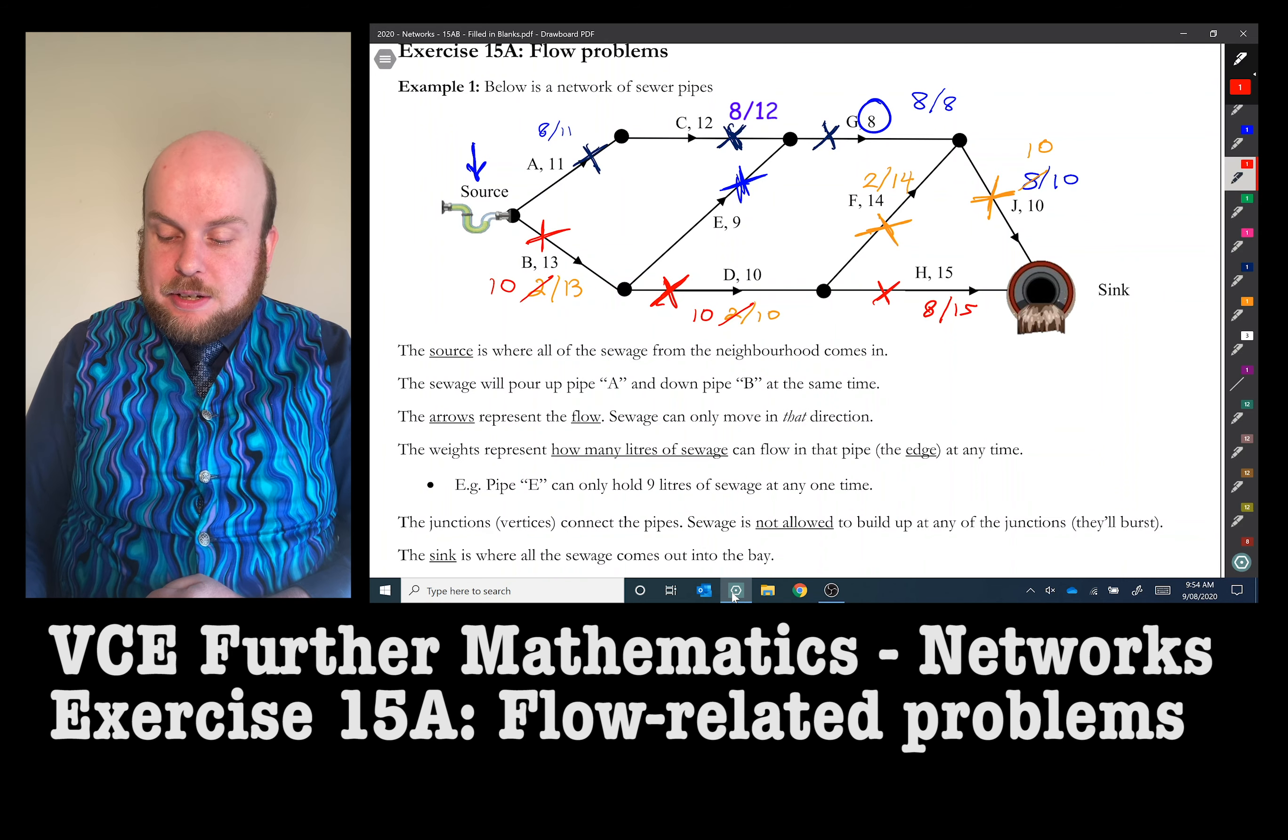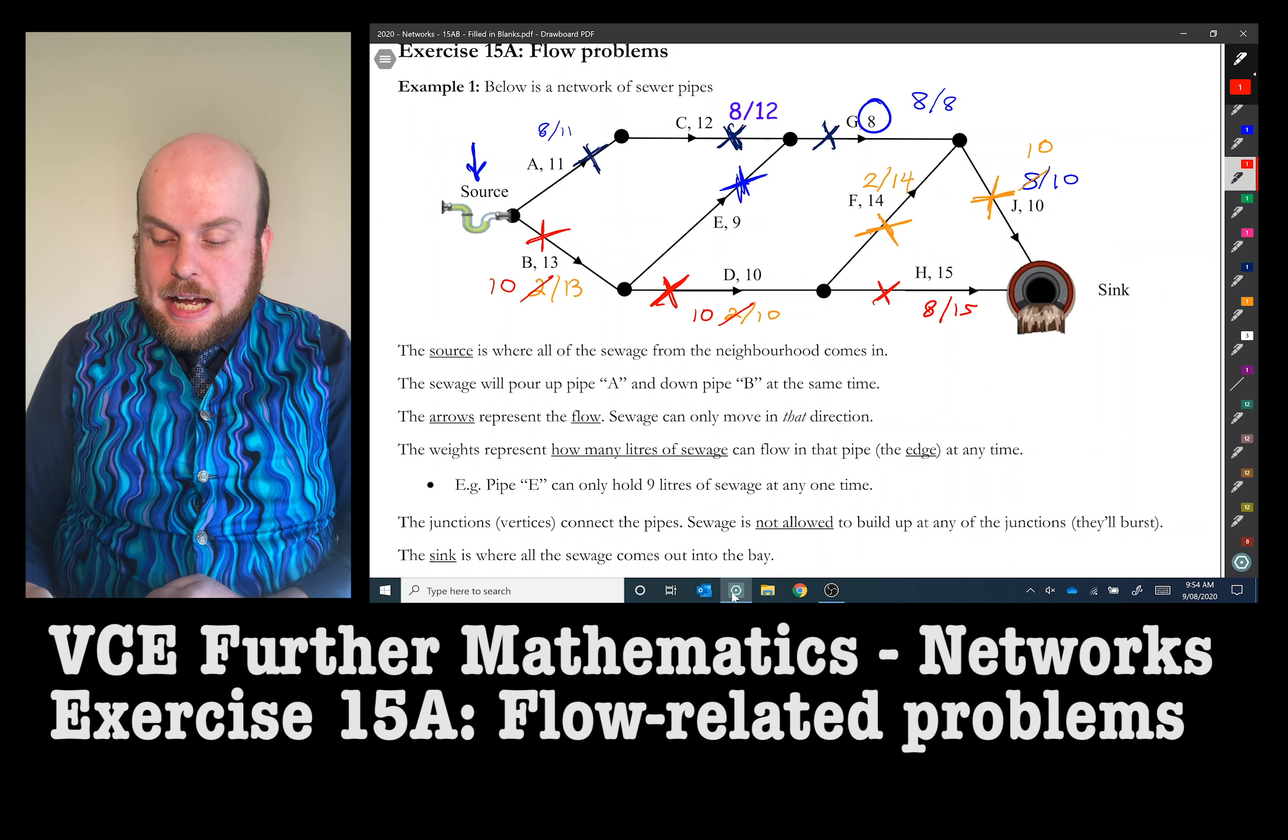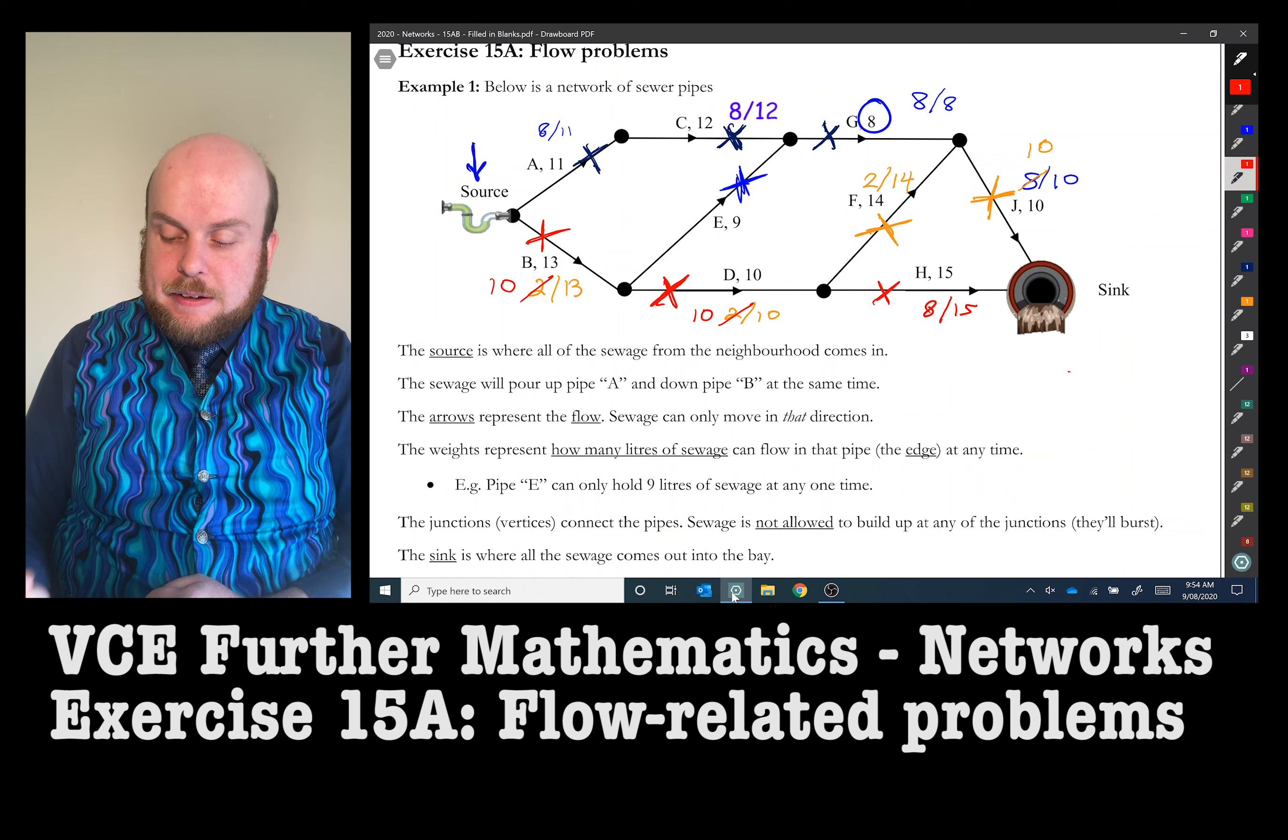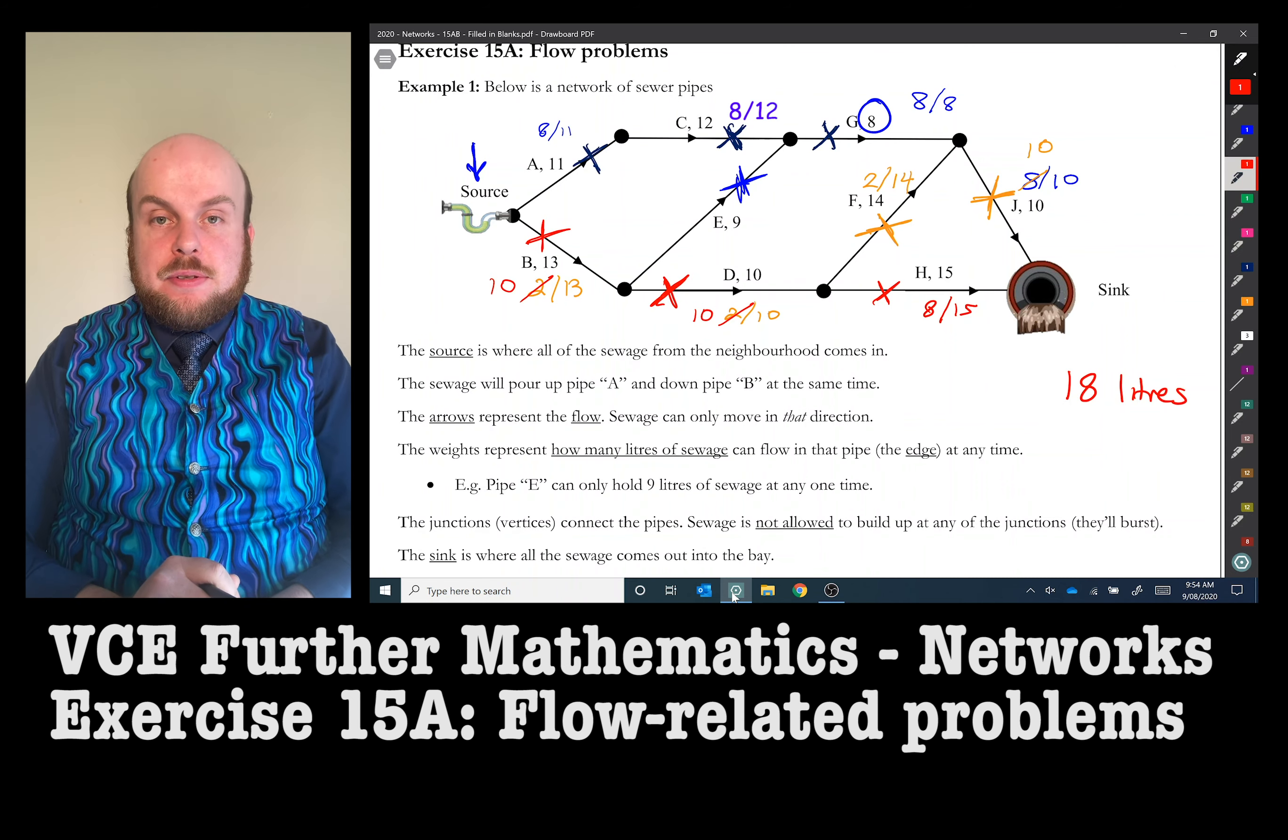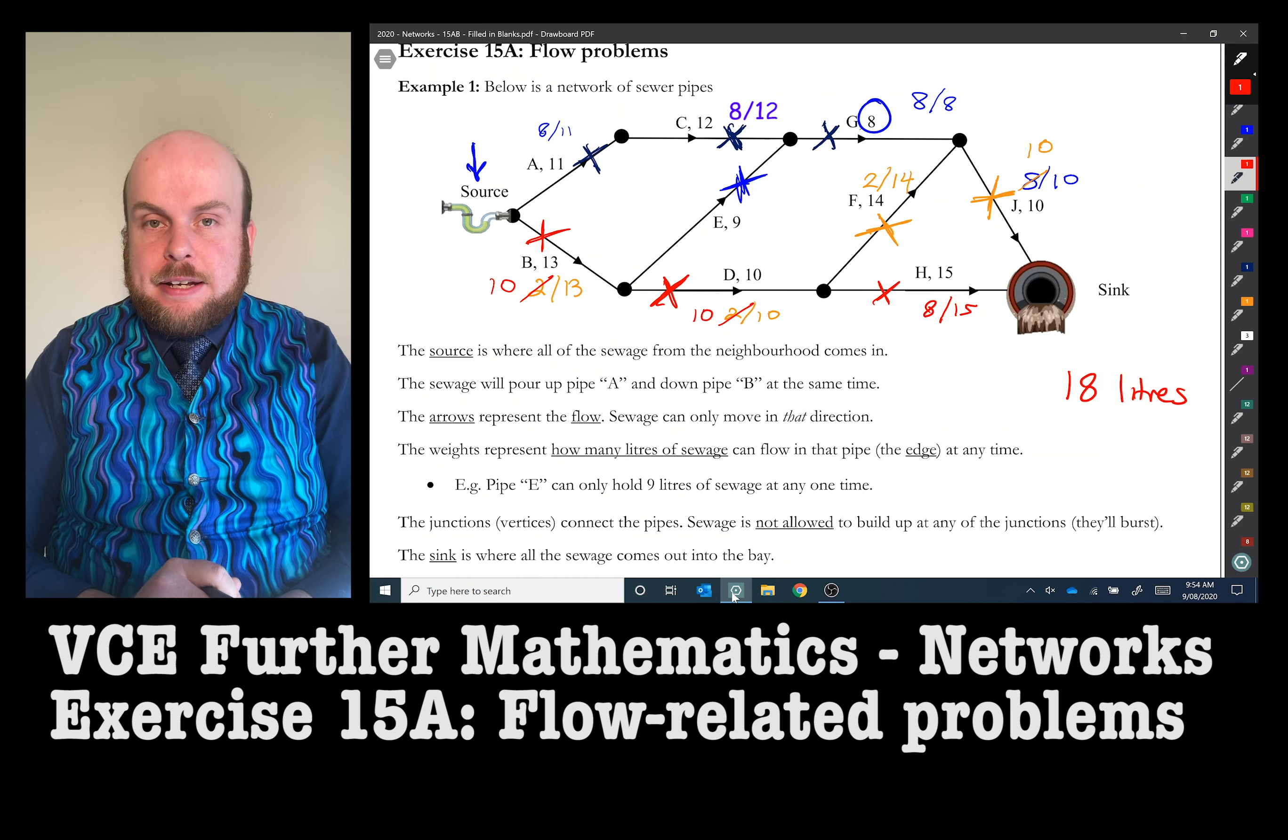So how many liters got through in the end? 10 liters up this way, 8 liters is the only other one. So therefore, it was a total of 18 liters is our maximum flow. In the next example, we're going to use the same method and also show the other different methods that we can use to solve this problem.